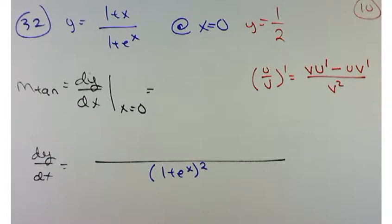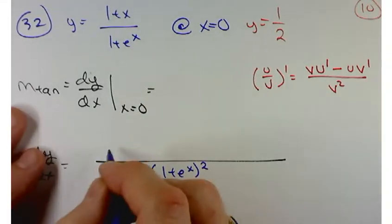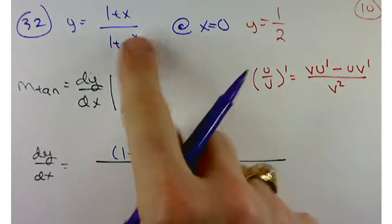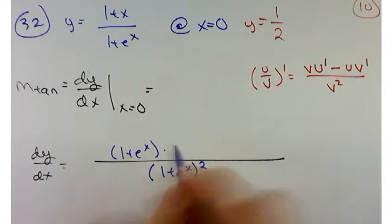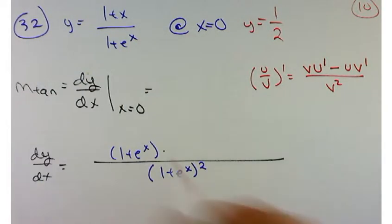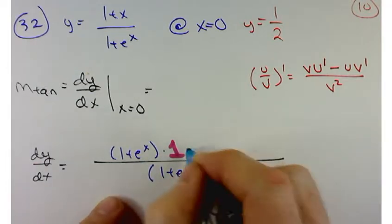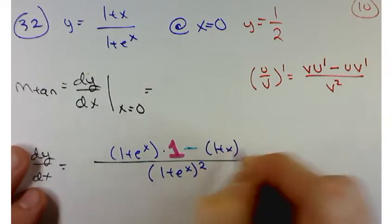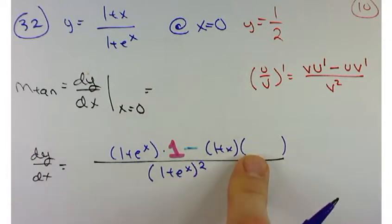So the denominator squared, the denominator again, times the derivative of the numerator. What's the derivative of the numerator? One. Minus the numerator, which is one plus x, times the derivative of the denominator, e of x. Good.